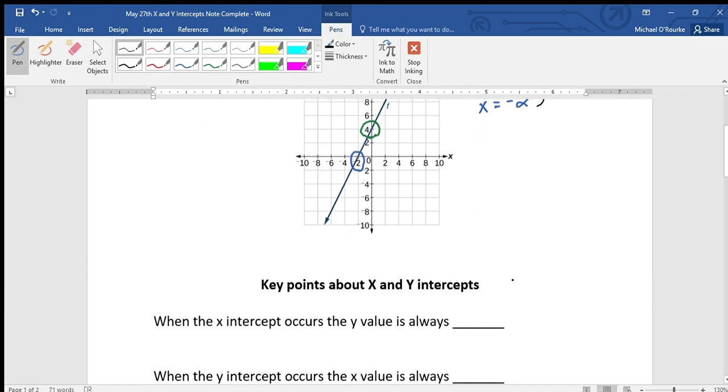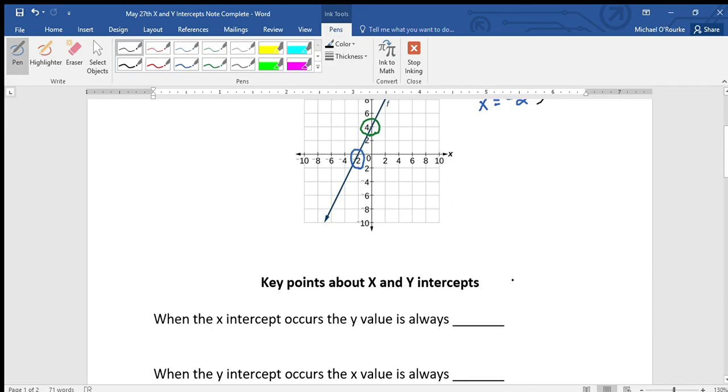If we take a look, there's something interesting that happens when the x-intercept occurs. When the x-intercept occurs, it could be right here, could be right here, anywhere along this line. It never happens above the line because if it happened there it wouldn't cross the x-axis. If you look all along every one of these points, what's the y value?